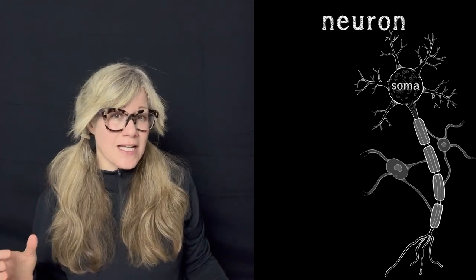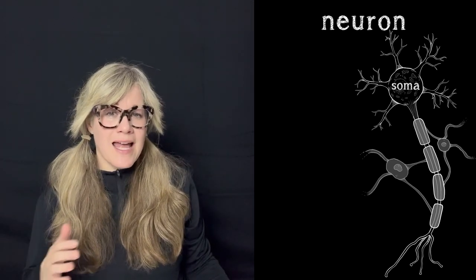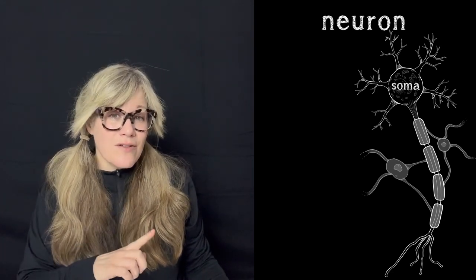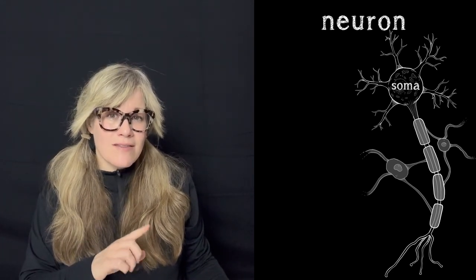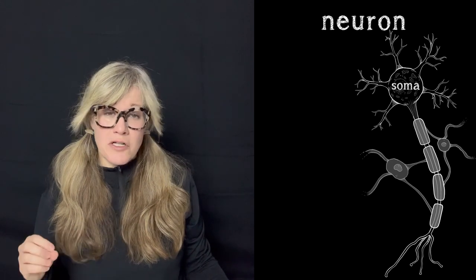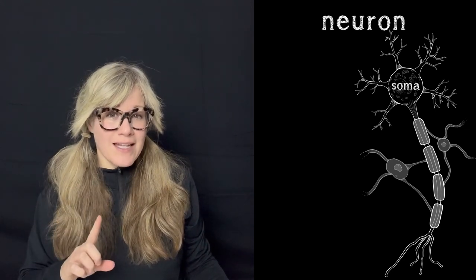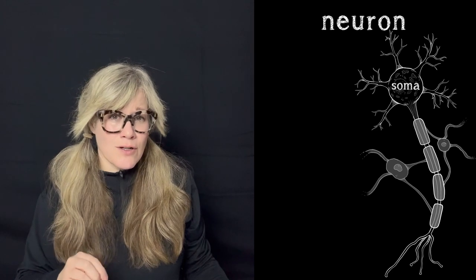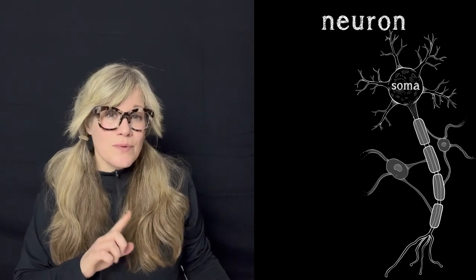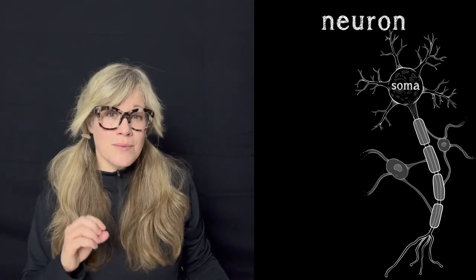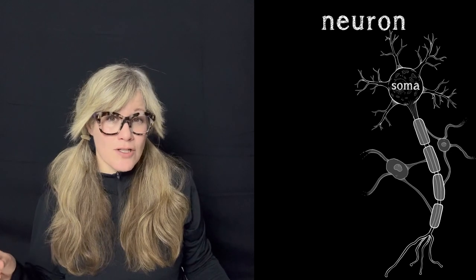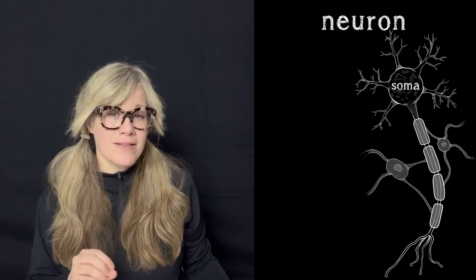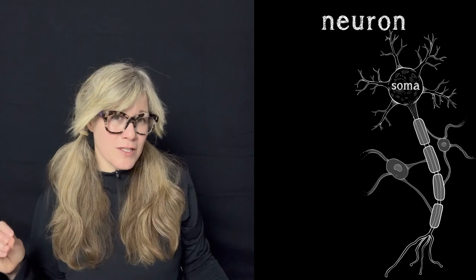It has a nucleus containing genetic material and organelles suspended in cytosol. Like most other cell bodies, the soma carries out basic cell functions, but on top of that, it carries out all sorts of business specific to nervous system function. This will get clearer as we get more acquainted with the neuron's main job, and that is cell-to-cell communication by a process called neurotransmission.